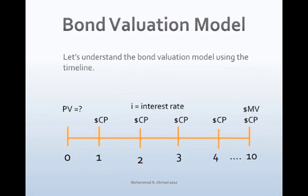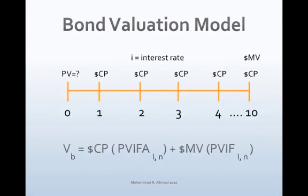Once you buy a bond, you will receive interest payments — also referred to as coupon payments — every year for the next 10 years. At the end of the 10th year, you will receive the maturity value, also referred to as par value. To find the value of the bond, bring all coupon payments to today's value, which is the present value of an annuity. The maturity value is a lump sum received at the end of year 10. The interest rate used to discount the cash flows is the interest rate of similar risk corporate bonds today.